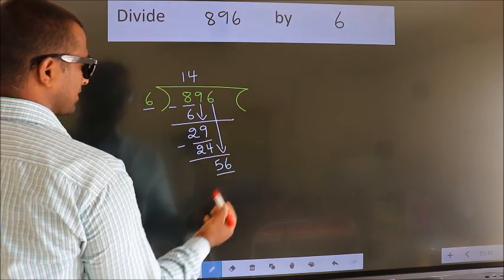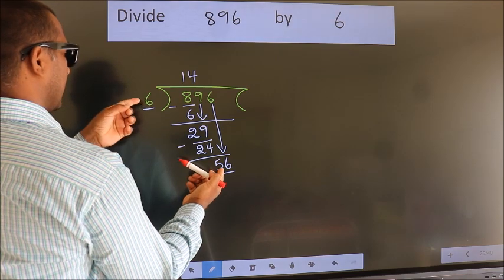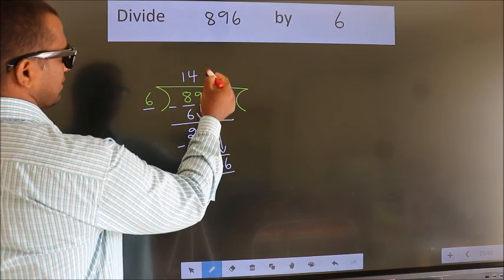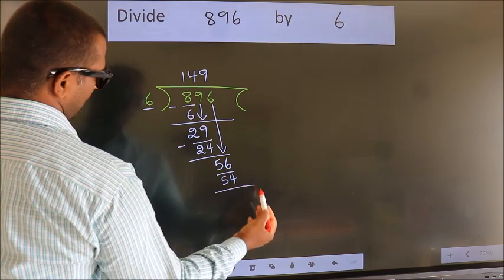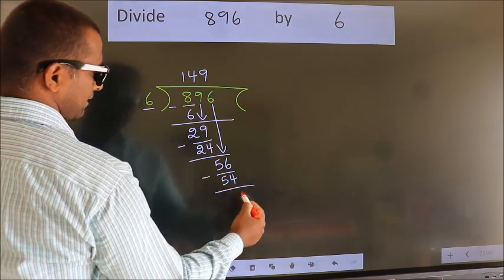So, 56. A number close to 56 in the 6 table is 6×9=54. Now we subtract. We get 2.